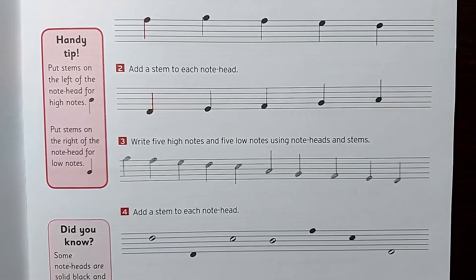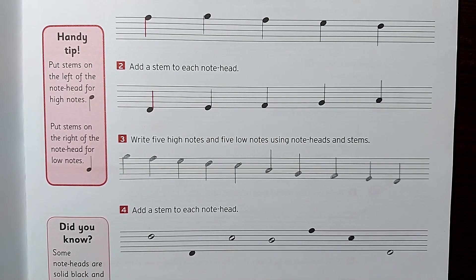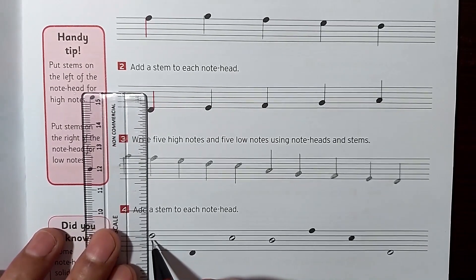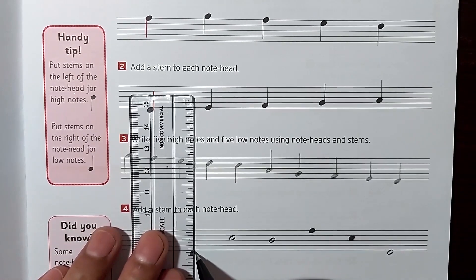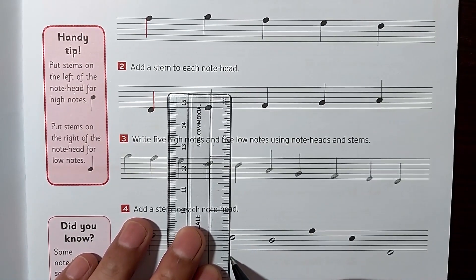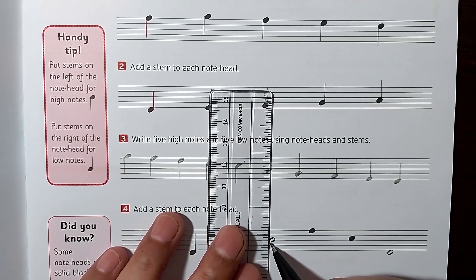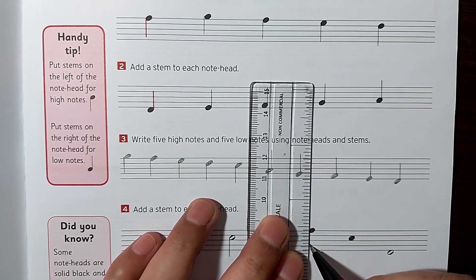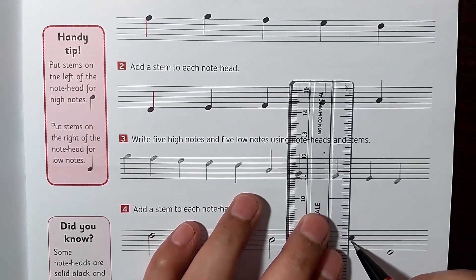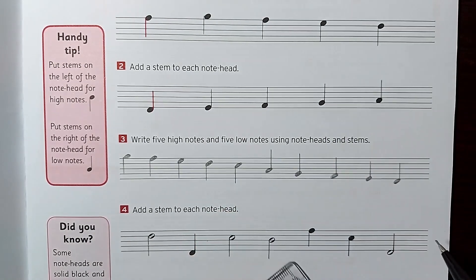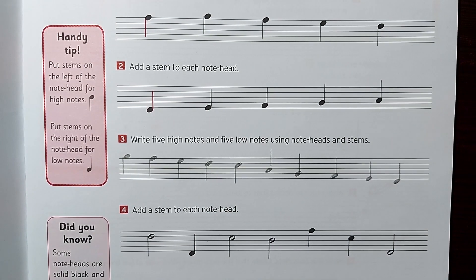These are lower notes so the stems go up. In the last exercise, notes are already given and we only have to add the stems. High note — stem goes down. Low note — stem goes up. High note — down. This is a middle one so you can go either way; going down here. High note going down, high note going down, and low note going up.